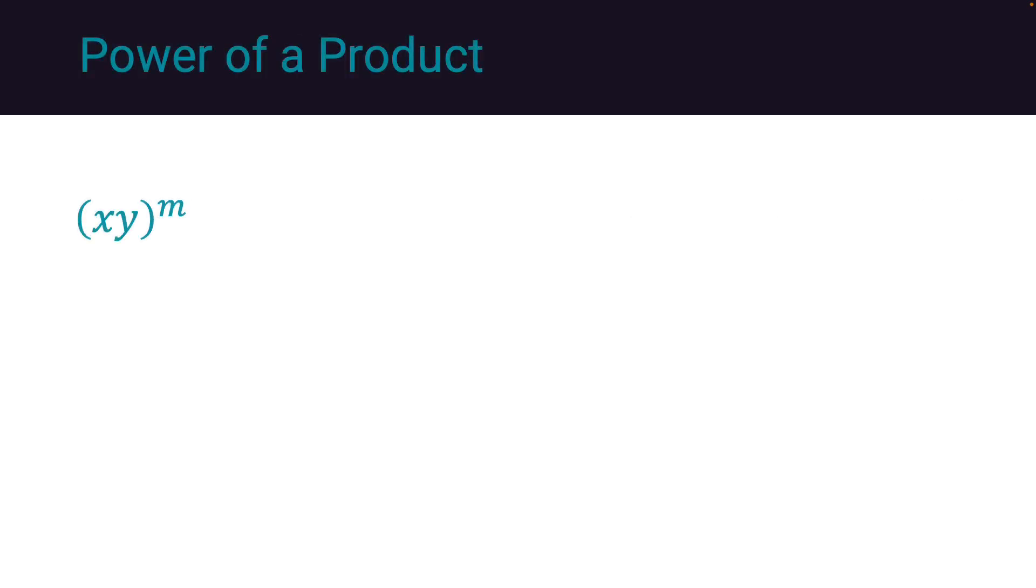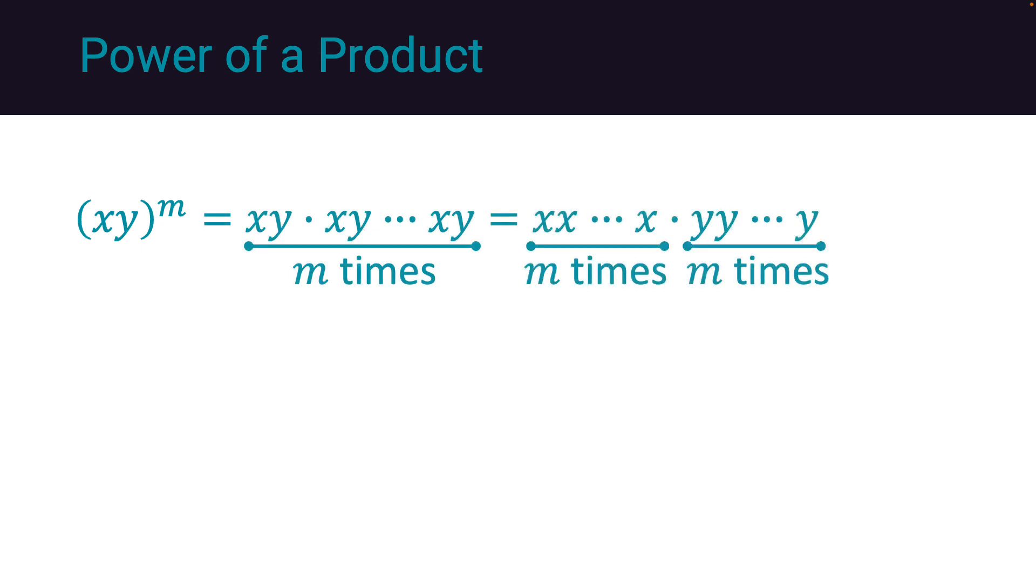x times y to the m is the power of product. This is equivalent to x times y m times. We can reorganize the variables such that the x's are on one side and the y's are on another. This produces x to the m times y to the m.